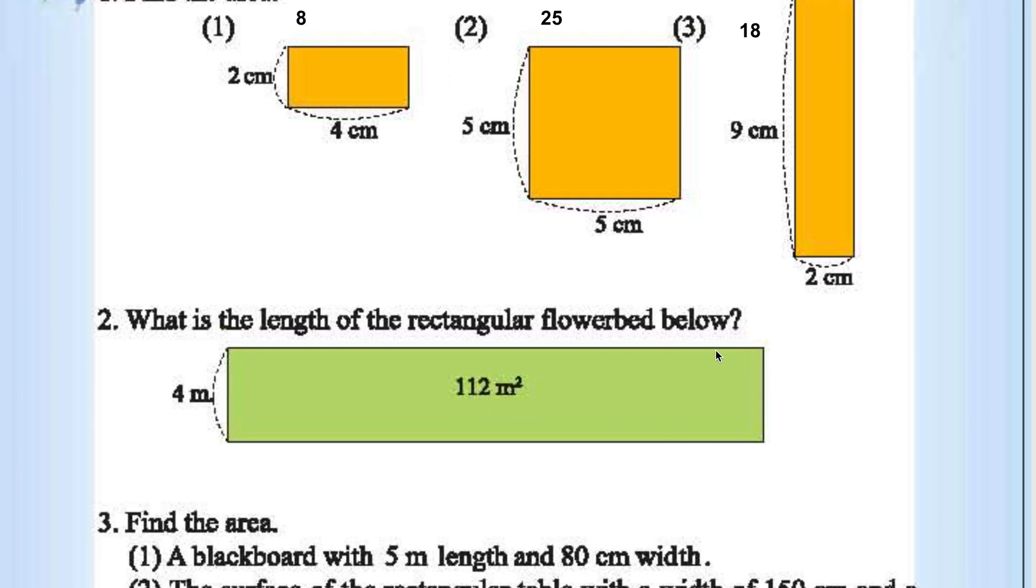What is the length of the rectangle flowerbed below? Area divided by width gives you length. 112 by 4 is nothing but 28, 28 meters.